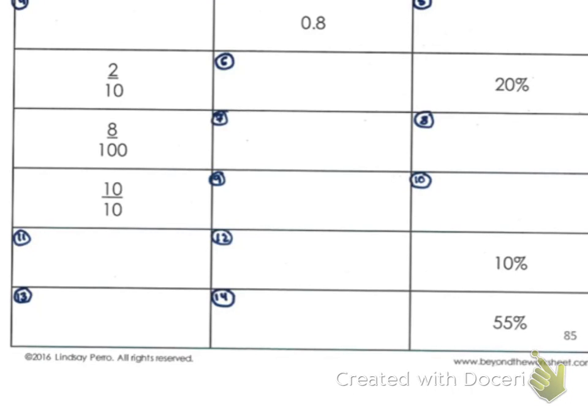Taking a look at question number 7 and question number 8 from the fractions, decimals, and percents practice, they only give us 8 one-hundredths. From there, we need to convert it to a decimal and convert it to a percent.